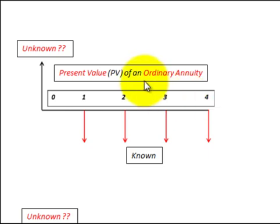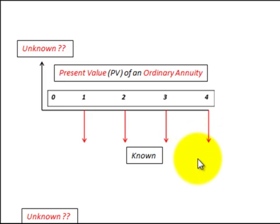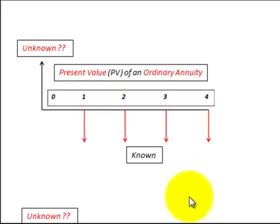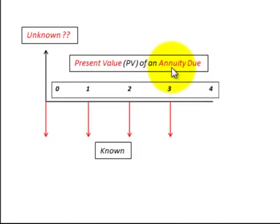By definition, remember that ordinary annuity payments are at the end of each period, and annuity due payments are at the beginning of each period.